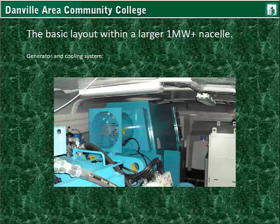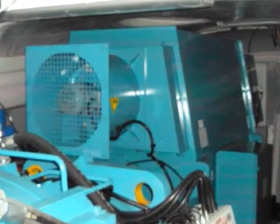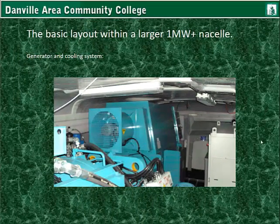The high speed shaft connects to the generator, which has its own cooling system. As discussed, there are losses with power conversion — changing mechanical energy into electrical energy results in some heat loss. If 5% of the energy is lost to heat, then the system is 95% efficient.